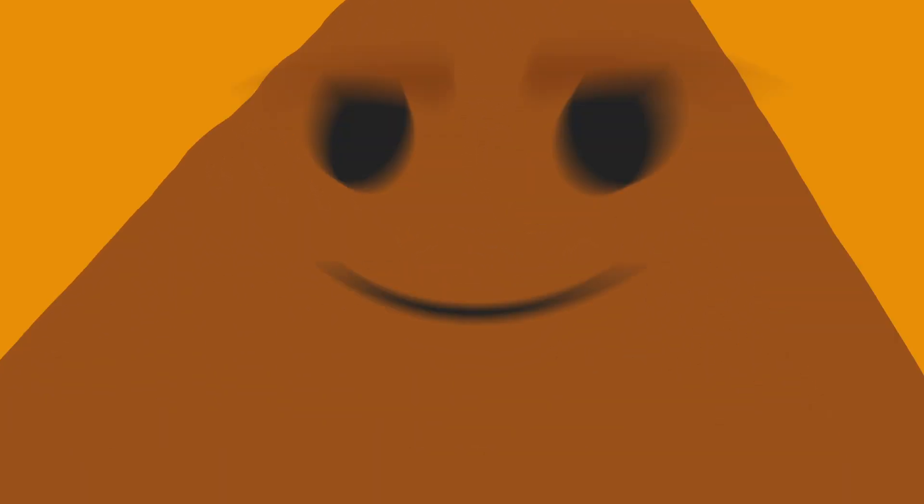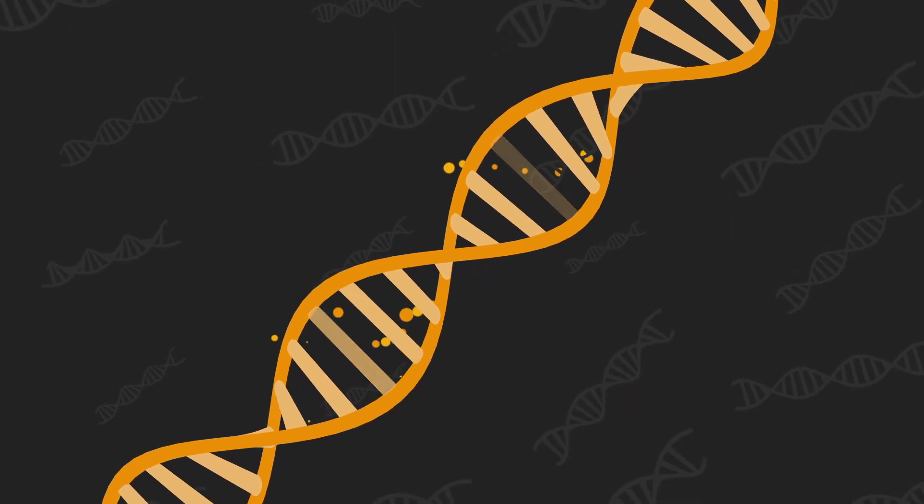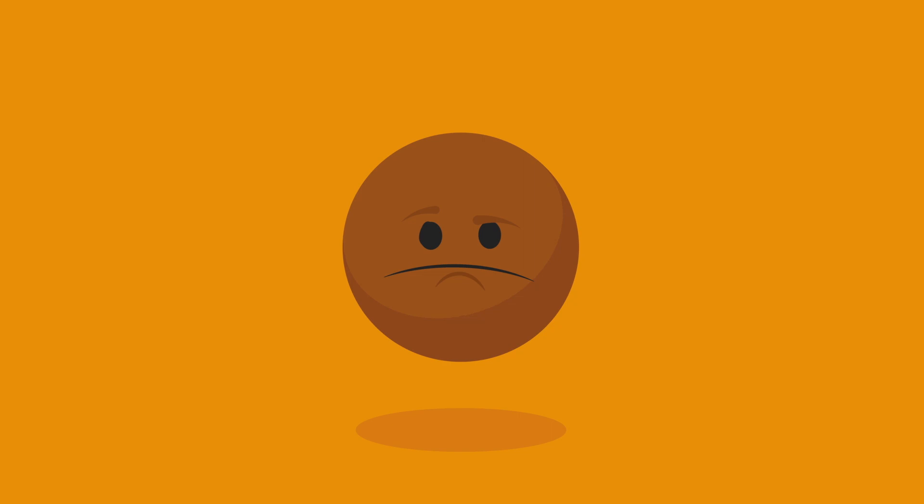Cancer cells get their shape-shifting ability by hot-wiring certain genes into action, making them faulty or overactive, and it's this behaviour that scientists plan to stop.